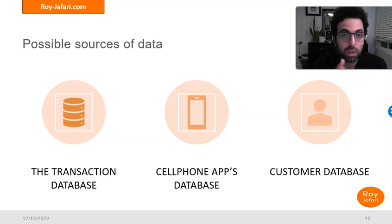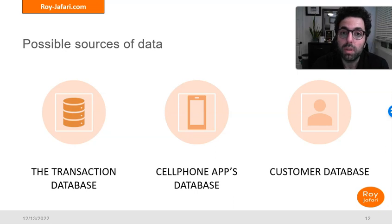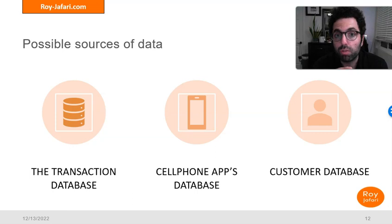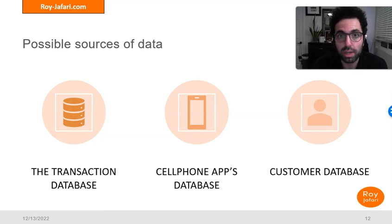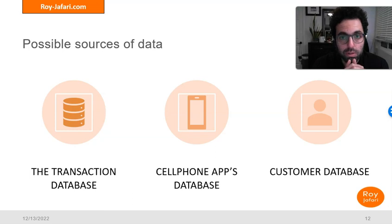That's one source that is certainly important. You also have the cell phone apps database. This one is relevant if your customer uses the app you provide for them — if they have their location open to you, you can also track where they are. That can be another source of data you can use for credit card fraud detection. And lastly, there is the customer database, where you have information about the customer — their demographic information, general income, credit score, and any type of information that can indicate risky behavior.